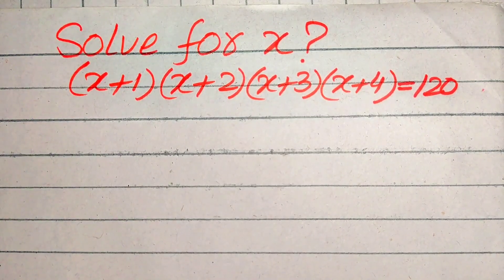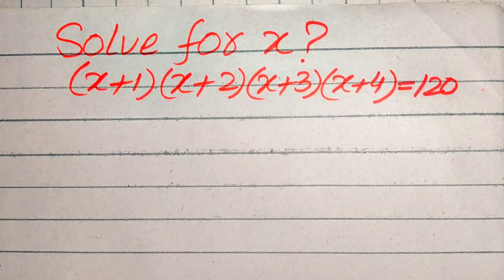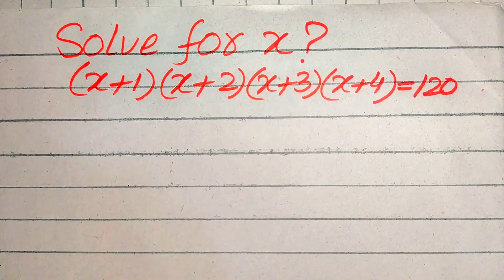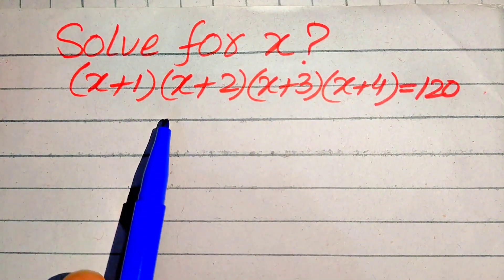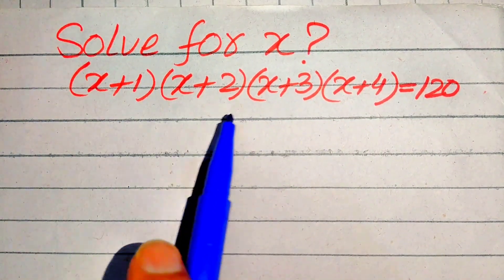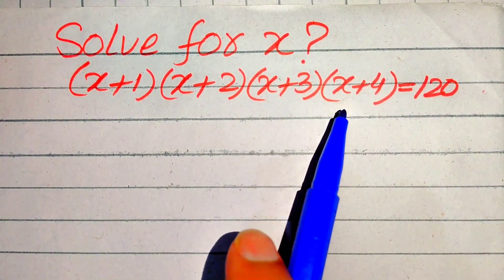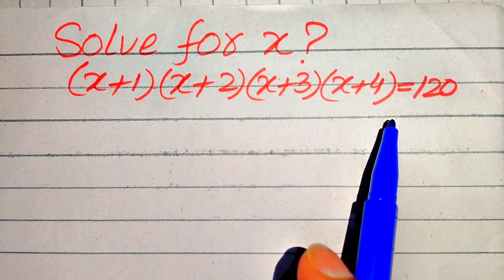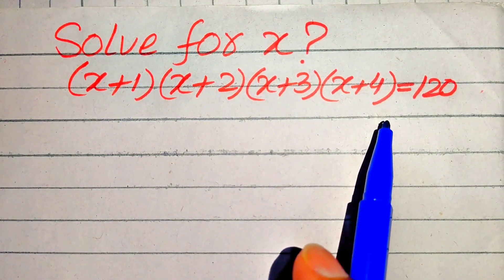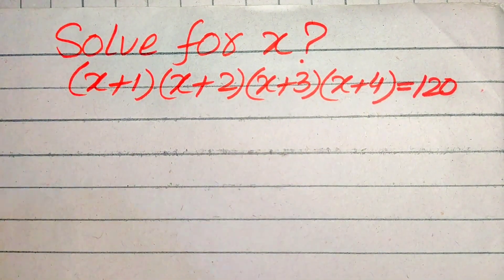Hello everyone. How to solve this problem for the values of x if we have (x+1)(x+2)(x+3)(x+4) = 120, and we solve this problem for the values of x.